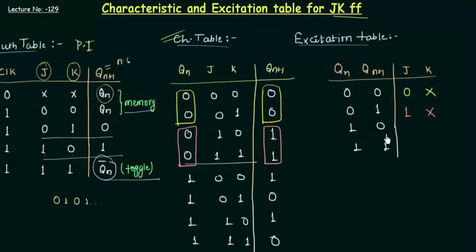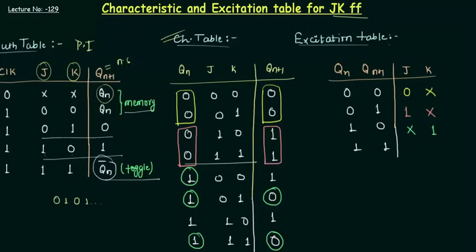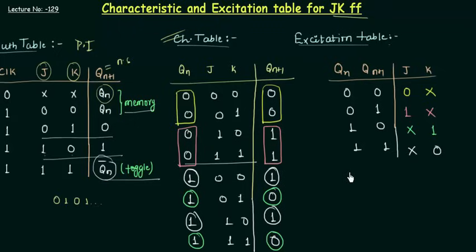For the third case when Qn=1 and Qn+1=0, looking at the characteristic table J is changing from 0 to 1 which makes it don't care, and K is 1. So J is don't care and K is 1. For the last case when Qn=1 and Qn+1=1, J is changing from 0 to 1 — so it is don't care — and K is 0. So don't care and 0. This is the excitation table for the JK flip-flop.